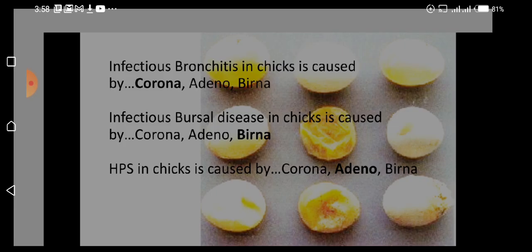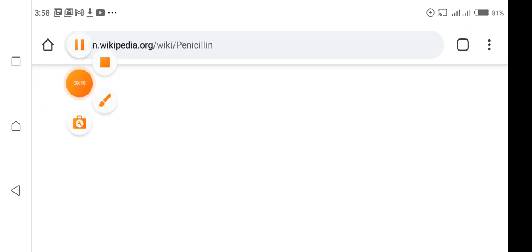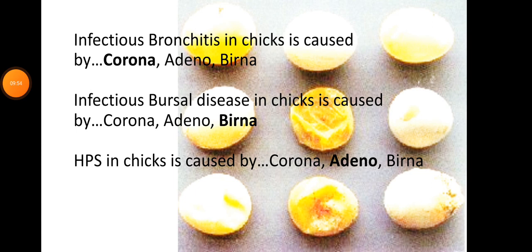Infectious bronchitis in chicks is caused by coronavirus. Infectious bursal disease (IBD) is caused by Birnavirus — Birna meaning two RNA, as it is a double-stranded RNA virus.